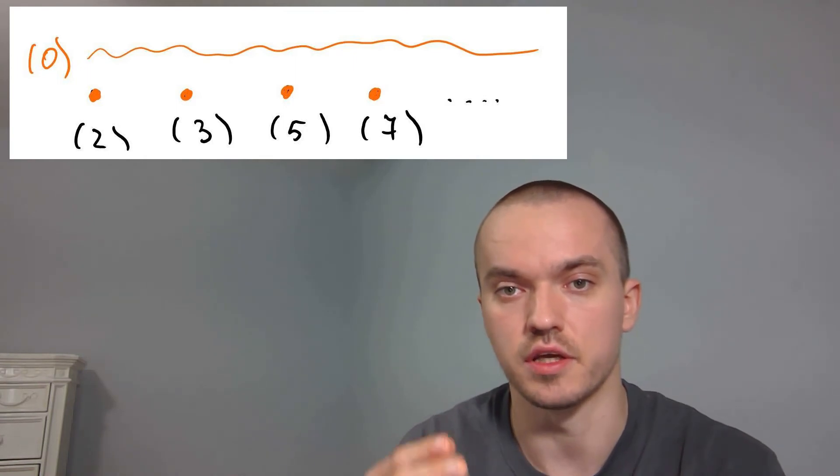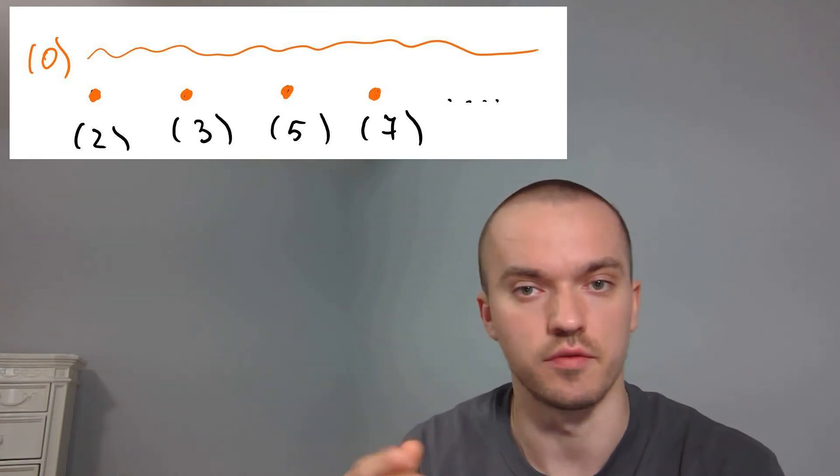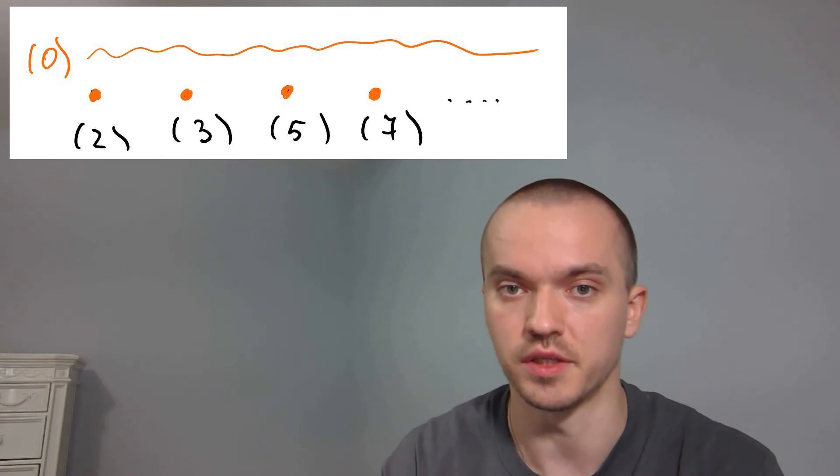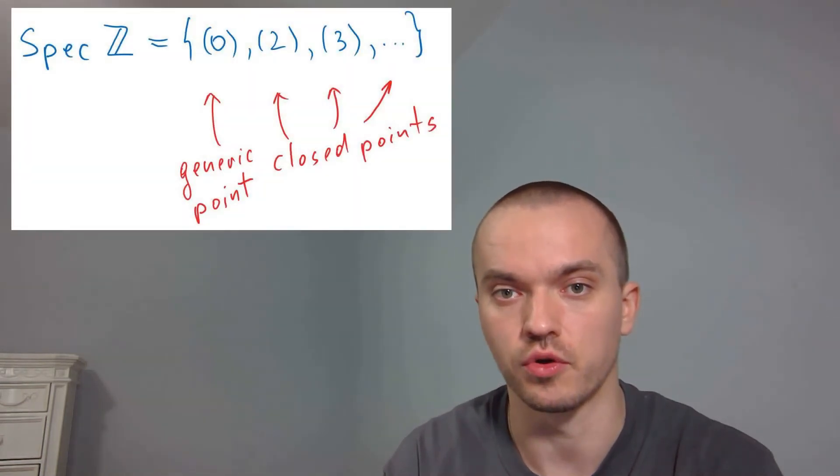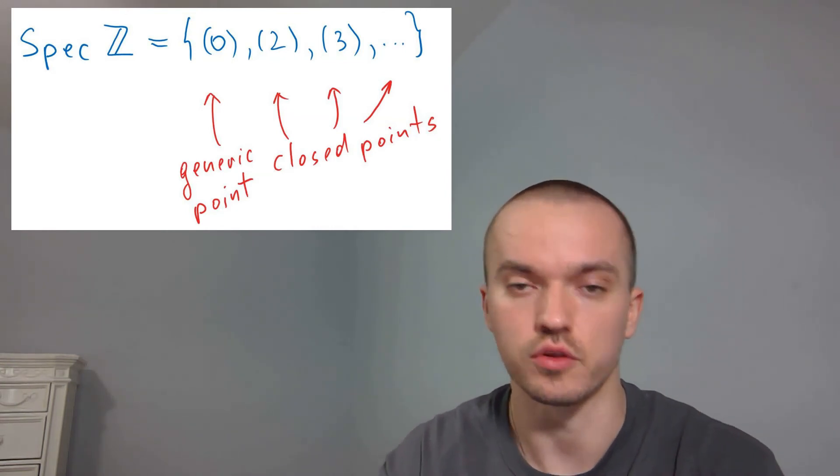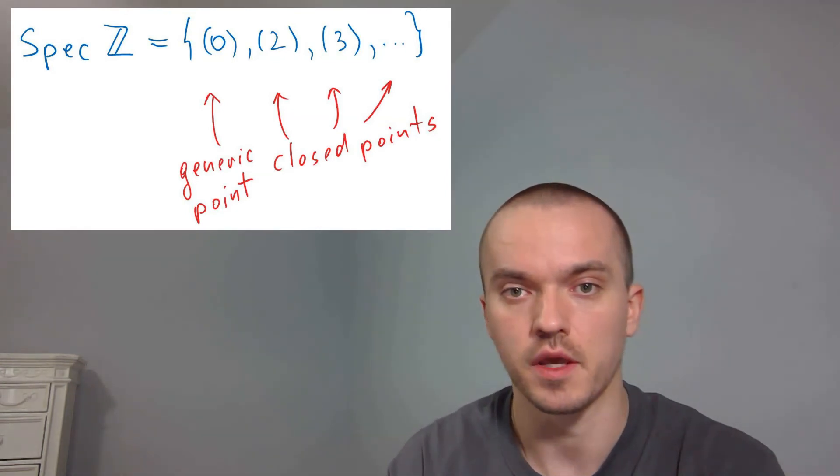In that case, the prime ideal is called maximal. Every time you choose an element from your spec R which is given by a maximal ideal, that point is called a closed point. So all prime numbers are going to be closed points in spec R.